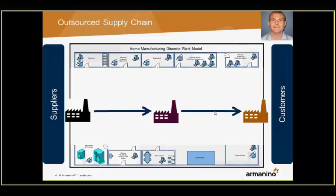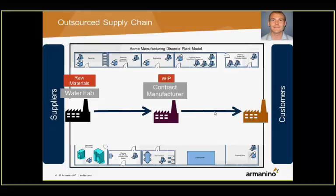In the outsourced model around Fabless, you have your raw materials, which are purchased from a wafer fab, and then you have your work in process, which is the production process steps that occur at your contract manufacturer. Once you've completed those goods and moved them on to a distributor, those finished goods are stored in another location. You'll purchase and own the raw materials as you receive them from your wafer fab, and they'll store them in what's called a dye bank on hand at that location.